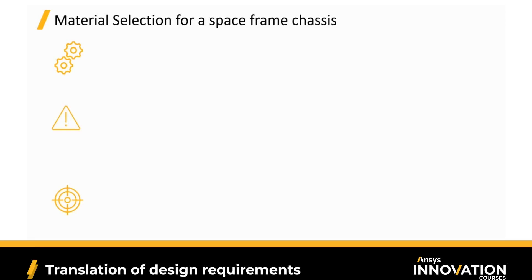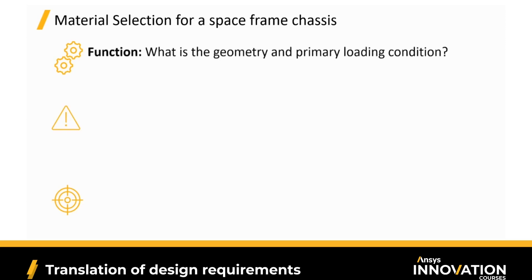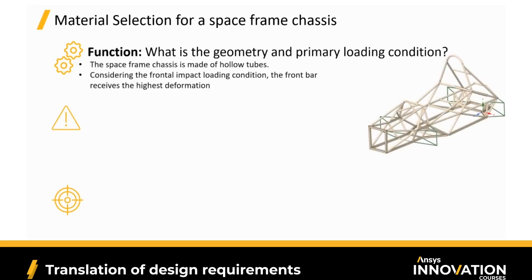For our selection, we need to define the function, the constraints, and the objectives. By function, we mean the geometry and the primary loading condition. Our space frame is made up of hollow tubes — that's our geometry. We're going to consider the frontal impact load condition, taken from another innovation course on space frame chassis analysis using Ansys Mechanical. In that condition, the front beams receive the highest deformation, and for material selection, this is best represented as a beam loaded in bending with fixed supports.